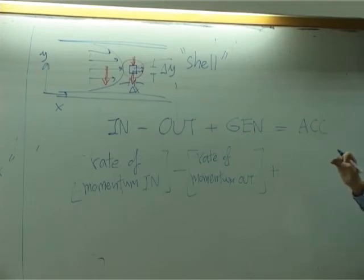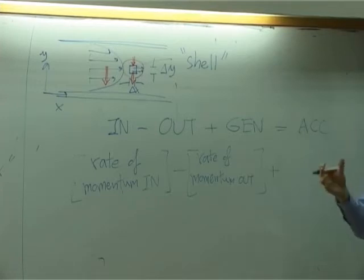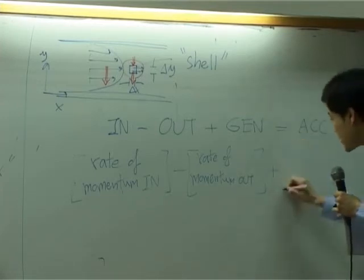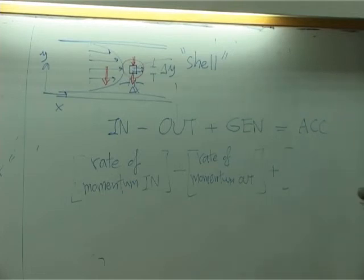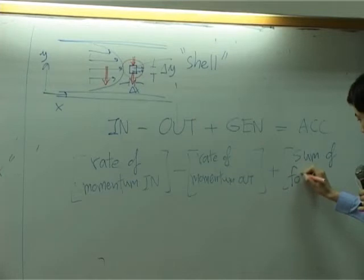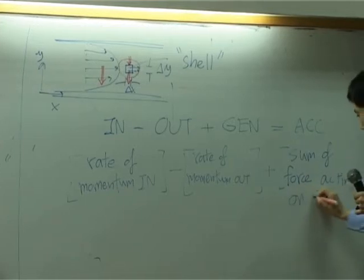How can we generate momentum? You apply force. Whenever you apply force to an object, the object gains momentum. So the generation term here can be written as sum of force acting on the system.